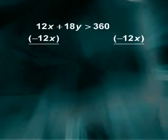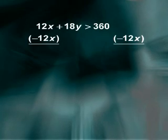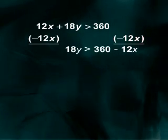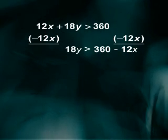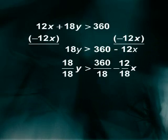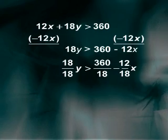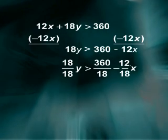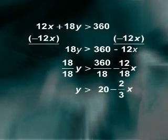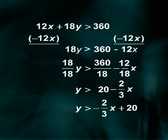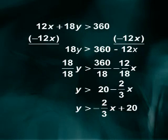Let's begin by converting this inequality from standard form to slope-intercept form. Subtracting 12x from both sides using the subtraction property gives 18y greater than 360 minus 12x. Dividing both sides by 18 using the division property leaves the direction of the inequality unchanged because 18 is positive. You obtain y greater than 20 minus two-thirds x, or y greater than negative two-thirds x plus 20.